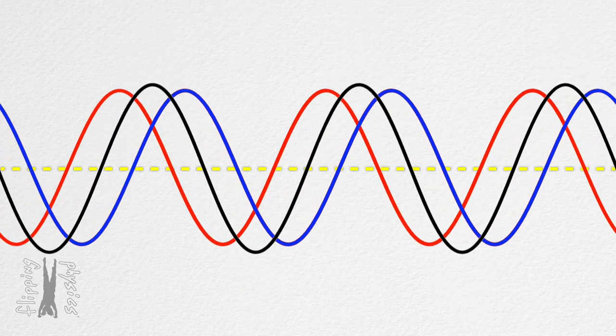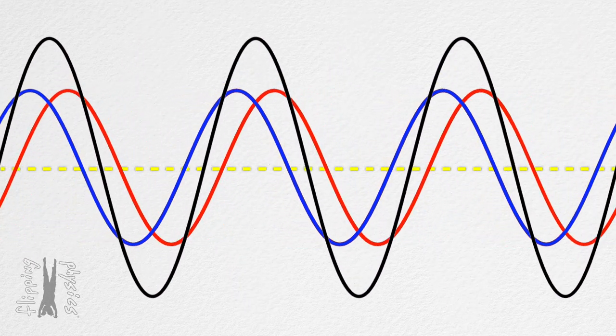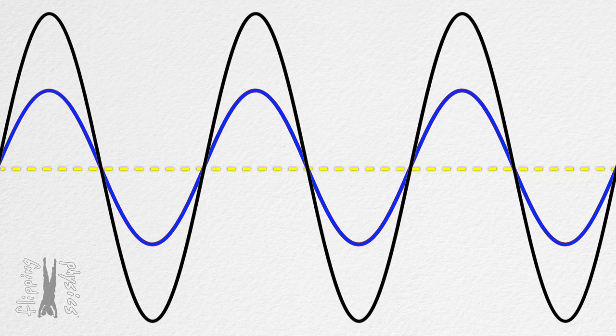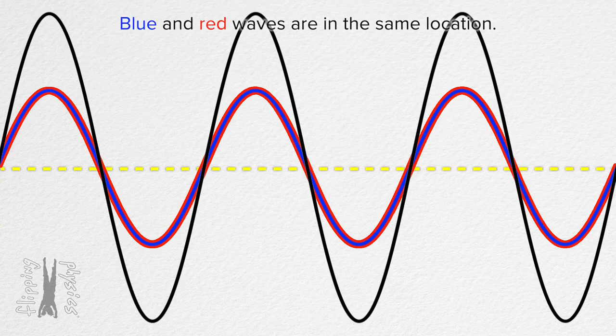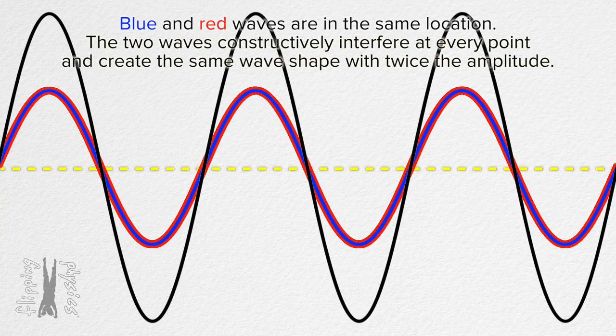When we pause the animation here, the red wave is in the same location as the blue wave. The two waves constructively interfere with one another and create the same wave shape as the red and blue waves, only with twice the amplitude. At this moment, both waves constructively interfere with one another and create the standing wave with twice the amplitude.